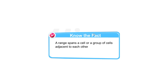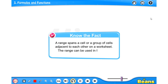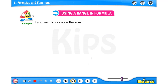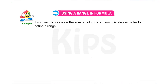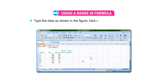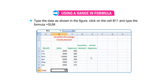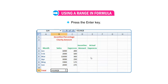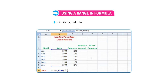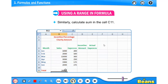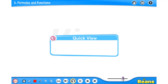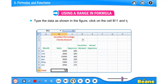The range can be used in formulas. For example, if you want to calculate the sum of columns or rows, it is always better to define a range. Type the data shown in the figure, click on cell B11, and type the formula: =SUM(B4:B9), then press the Enter key. The sum value will be displayed in cell B11. Similarly, calculate the sum in cell C11 using the same approach.